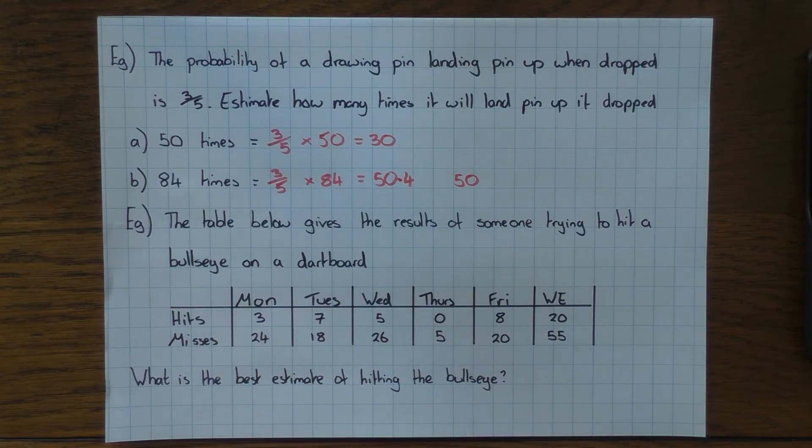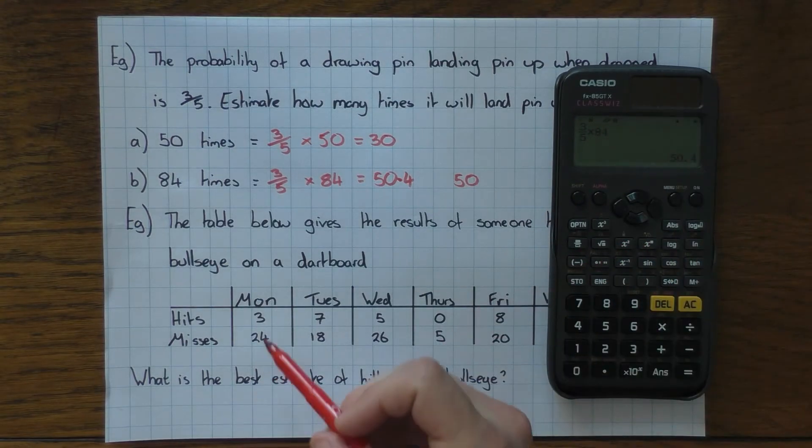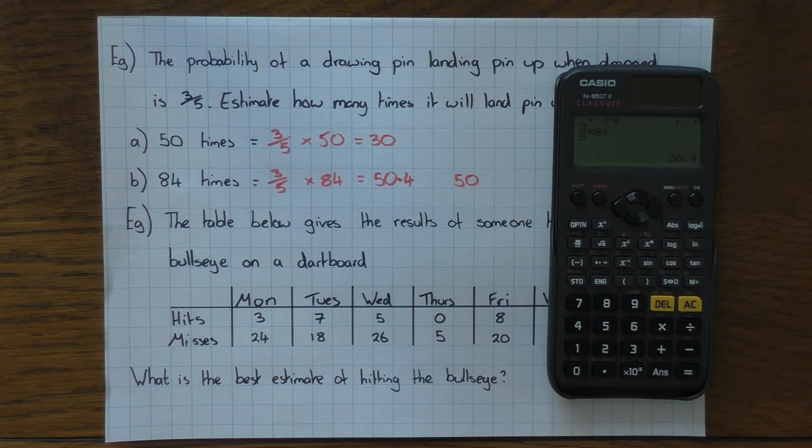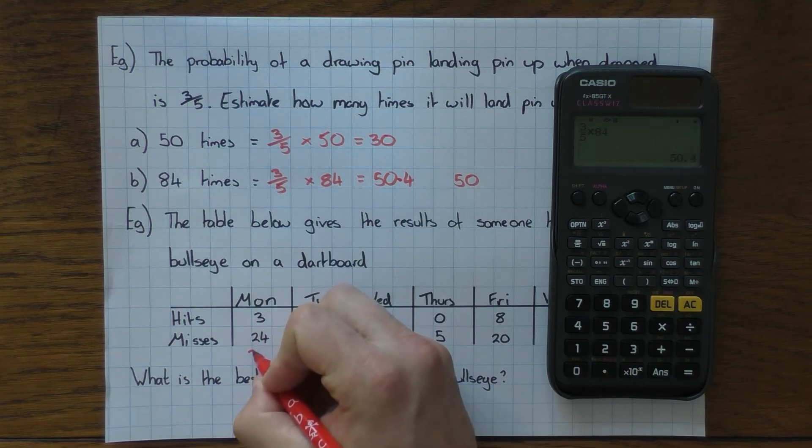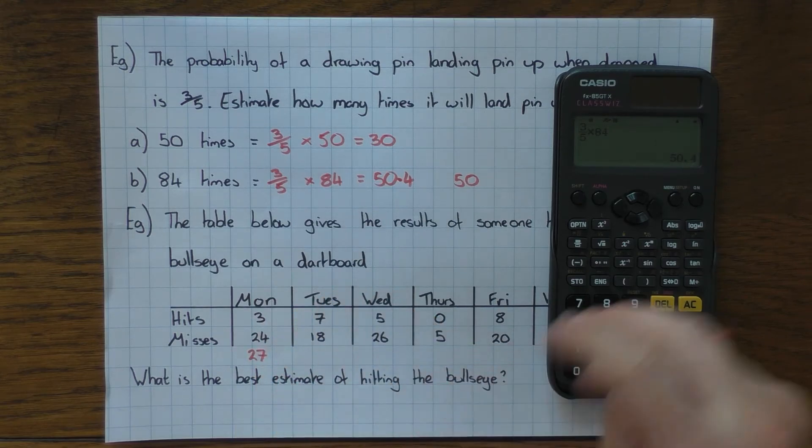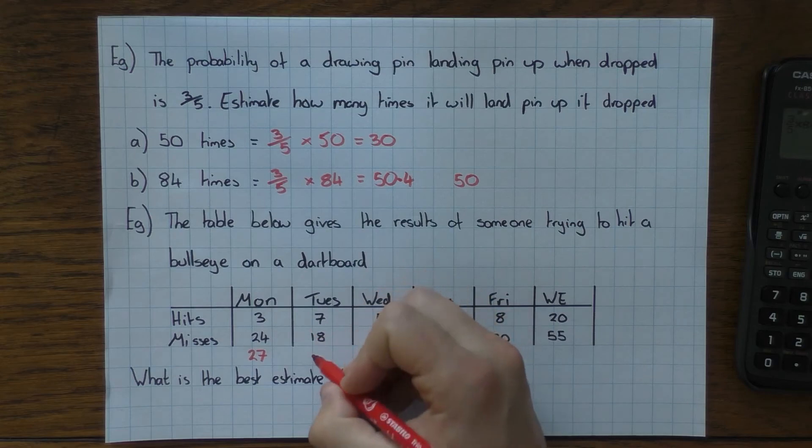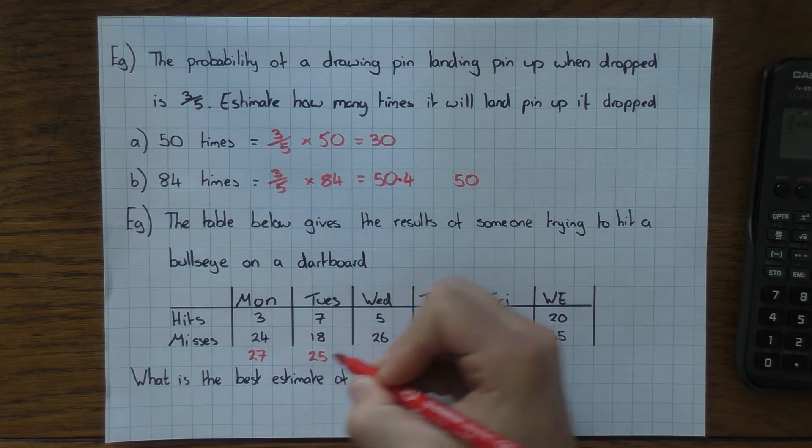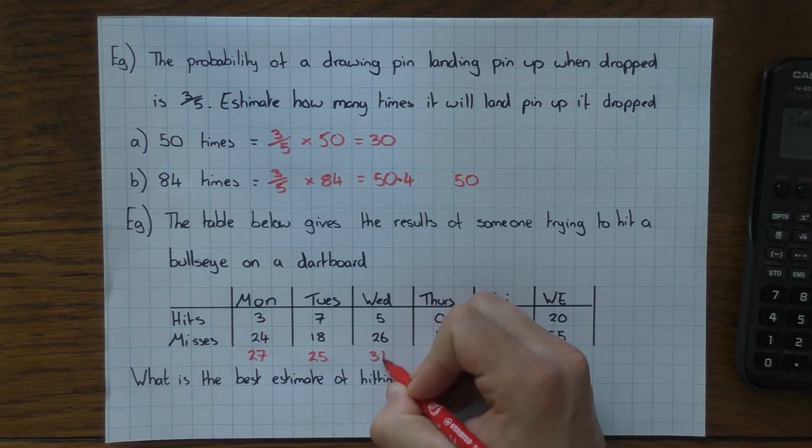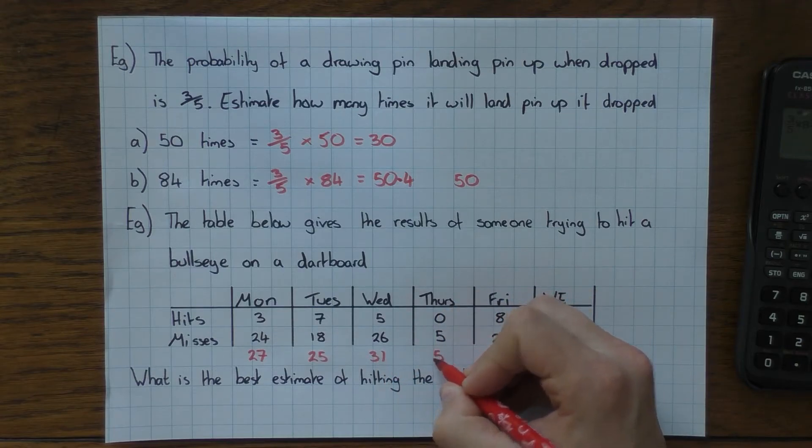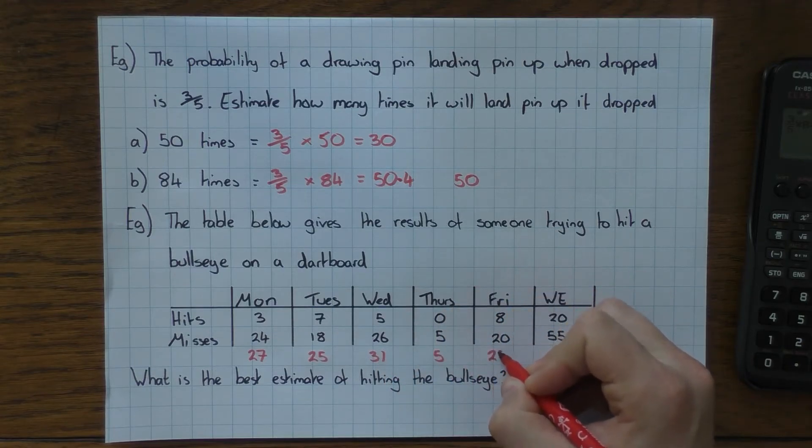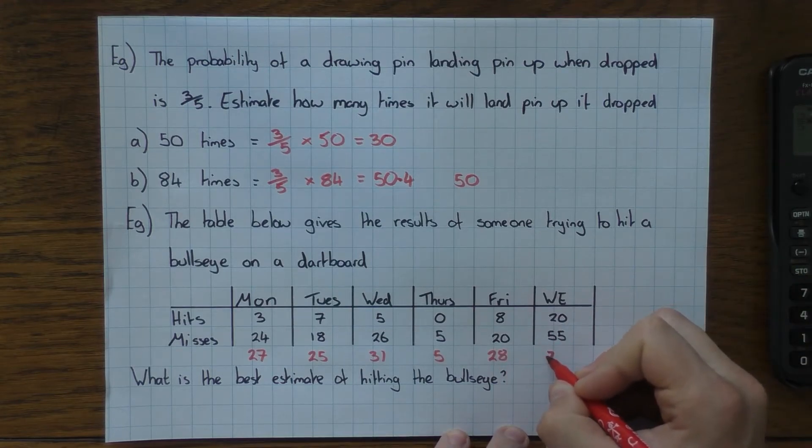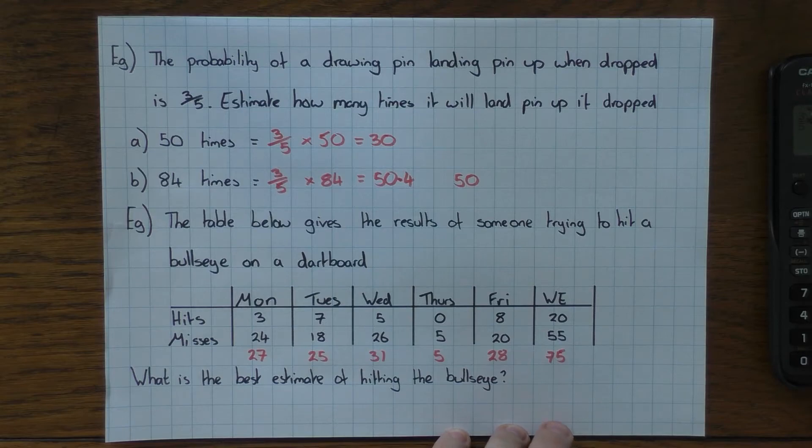So with this, the first thing to do is to work out the total. So if we're going to work out the relative frequency, we need to know the total. So 3 add 24 is obviously 27. So they've had a go 27 times there. 7 add 18 is 25. 5 add 26 is 31. 0 add 5 is obviously 5. 8 add 20 is 28. And 20 add 55 is 75.